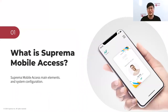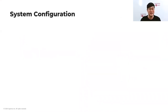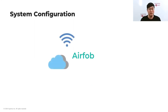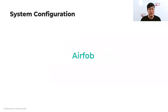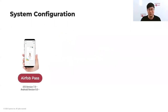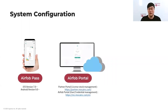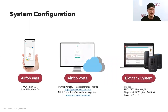First, let's talk about what Suprema Mobile Access is. I'd like to start with our brand name — we call our mobile access solution AirFob. We use the word 'Air' symbolizing wireless, remote, and cloud, and 'Fob' as in Key Fob. The AirFob system consists of the AirFob Pass application, the AirFob Portal, and the BioStar 2 system.